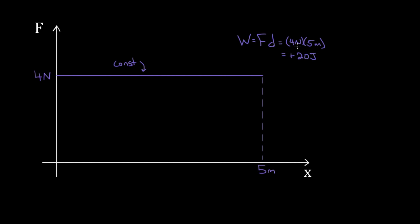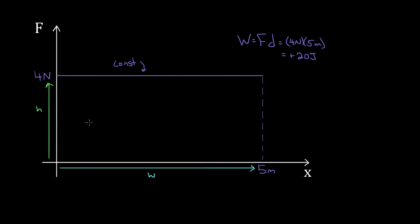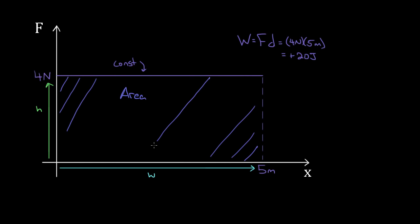If you're clever, you might notice that four Newtons times five meters is just the area of this rectangle. This line forms a rectangle on the force graph — four Newtons was just the height of this rectangle, and five meters was just the width. Height times width gives you the area of a rectangle. So when the force is constant, one way to find the work done is using the work formula, but another way is to find the area enclosed by the graph — from the force line down to the x-axis.